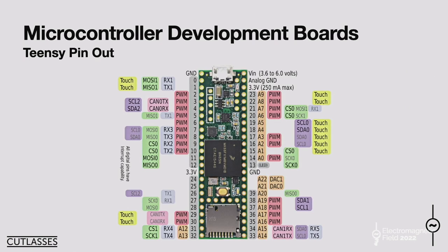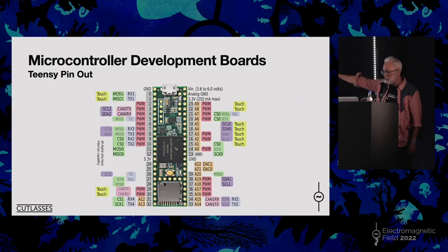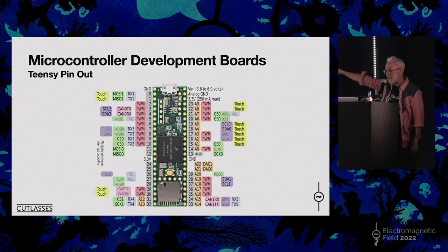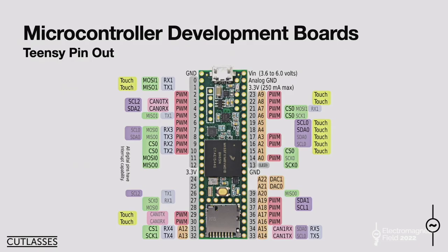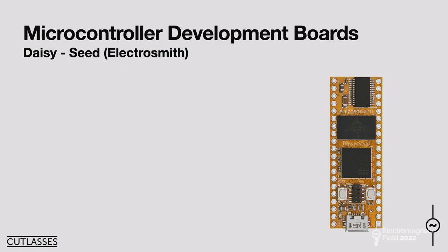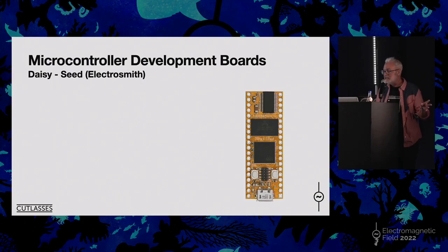This is what the pinout looks like for a Teensy 3.5 or 3.6. You can see pins A22 and A21 are your DACs — that's where you'd be getting your audio out, going digital to analog. Any of the pins that are grey are the analog pins, so that's where you get your ADC and convert from analog to digital. And then you've got audio in and out.